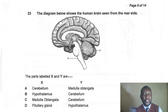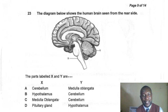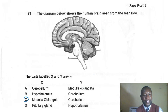Question twenty-three: the diagram shows the human brain seen from the rear. Parts X and Y are labeled. X is the medulla oblongata and Y is the cerebellum. The correct answer is C.